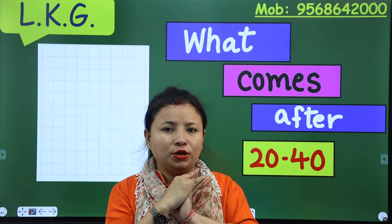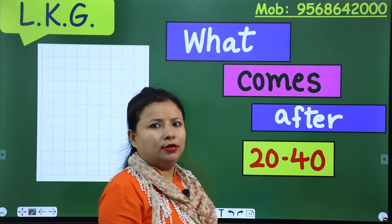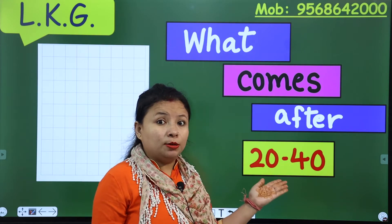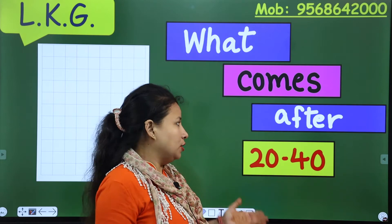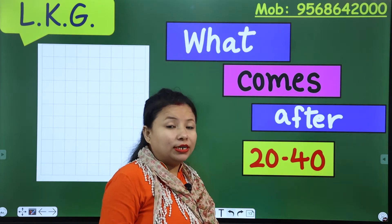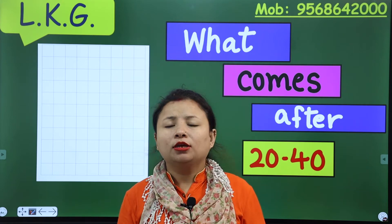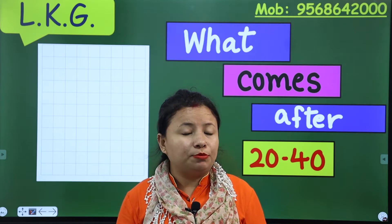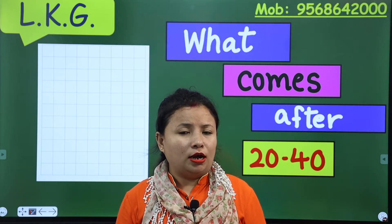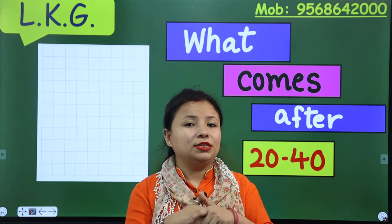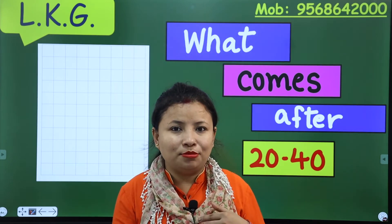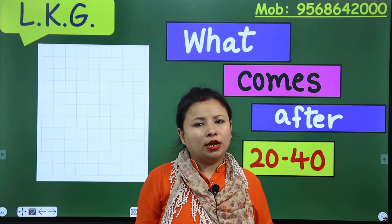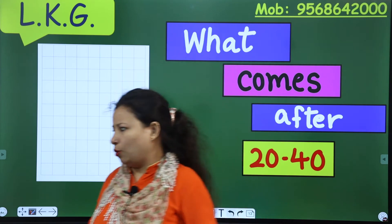Today we will learn and write what comes after, but the numbers are not the same — the numbers are 20 to 40. Have you got the concept of what comes after? After means the next number. After means the next number. Now I will show you some examples.